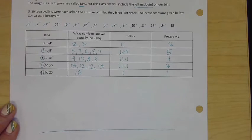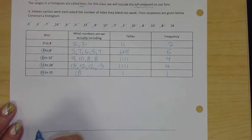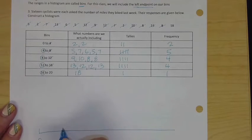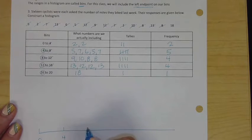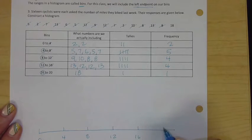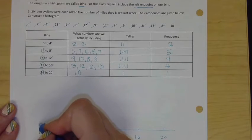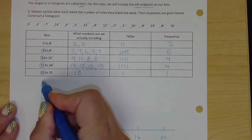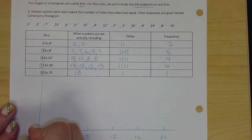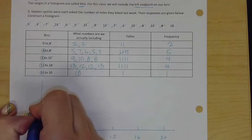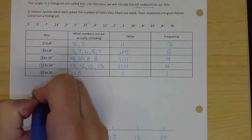We have to have an x-axis for lack of a better word here, and we're going to put our bins. We'll have zero to four, to eight, to twelve, to sixteen, and to twenty. Then going up this way is going to be our frequencies, and it looks like our highest frequency is five. One, two, three, four, five.